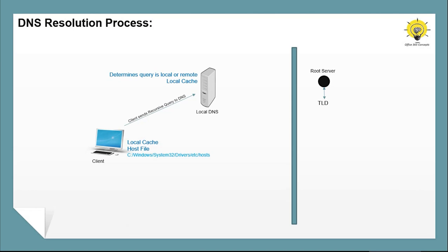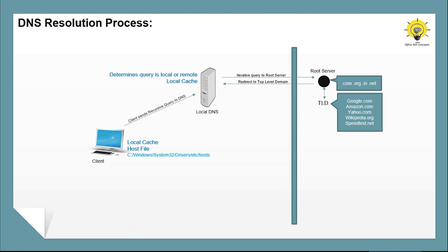If the DNS server doesn't have anything in its cache, it will send an iterative query to the root name server of the internet. An iterative query is a type of DNS query in which a name server contacts a second name server to perform a name to IP lookup. The root server holds all the domain suffixes — for example, .com, .in, .org, or .net — but it does not hold domain names. So it will redirect the DNS server to the top level domain server that holds all the domain names. The top level domain server will have a record for the domain and the IP address. The response is sent back to the DNS server, which saves this record in local cache for future reference and sends the IP address to the client.